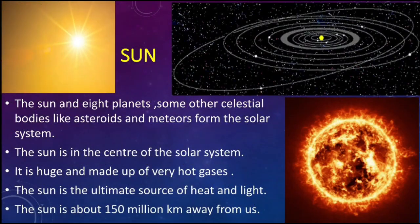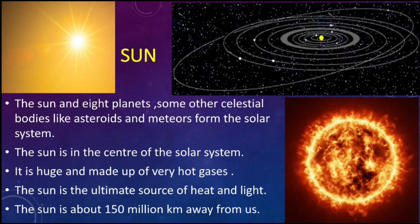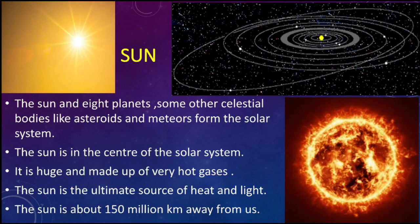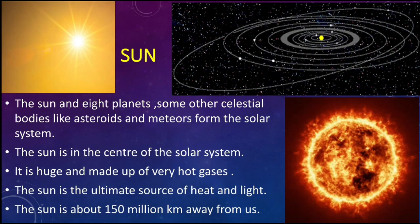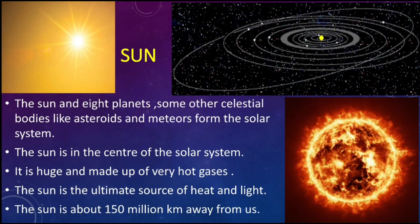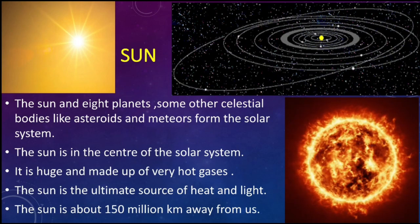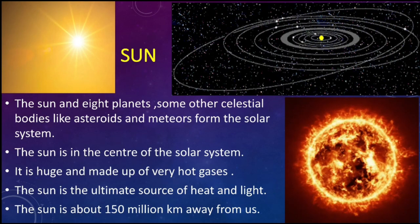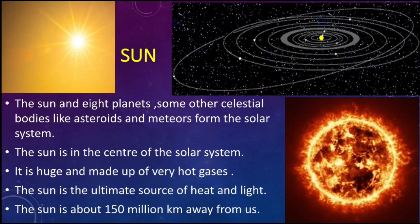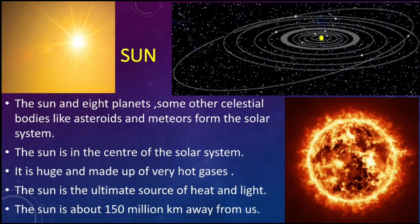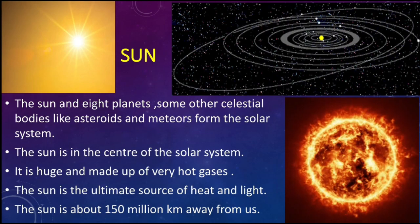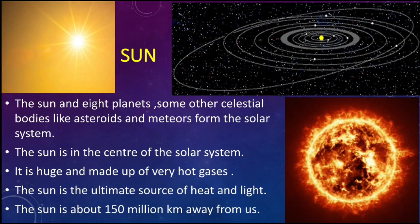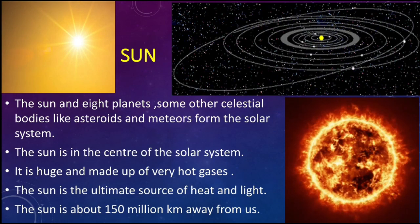Now coming to the next celestial body: the Sun. The Sun is the centre of the solar system. It is huge and made up of extremely hot gases. Even though the Sun is far away from us, we can feel its tremendous heat. The Sun and eight planets, along with other celestial bodies like asteroids and meteors, form the solar system. The Sun is the ultimate source of heat and light and is about 150 million kilometres away from us.